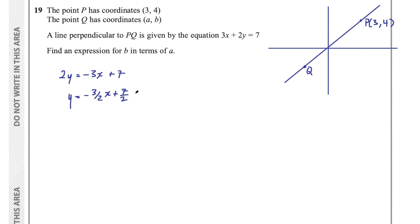Then we know that the y-intercept is 7 on 2, or 3 and a half, so that would be up here. And then our gradient is negative 3 on 2, or negative 1 and a half. So, well, that's like something like that.